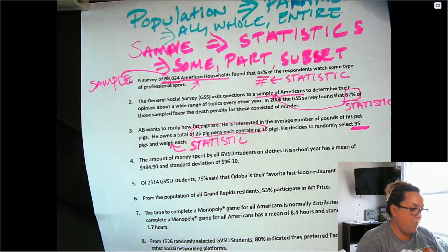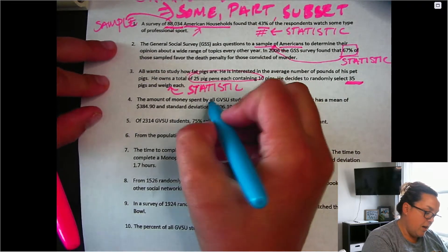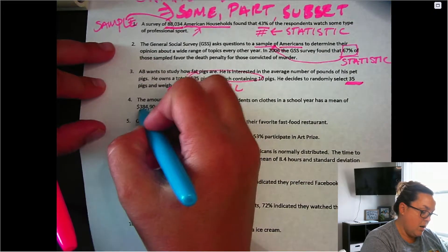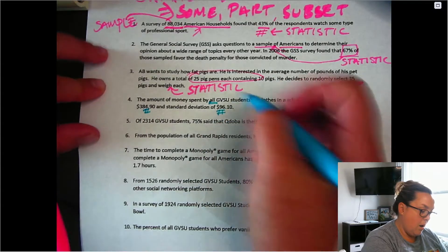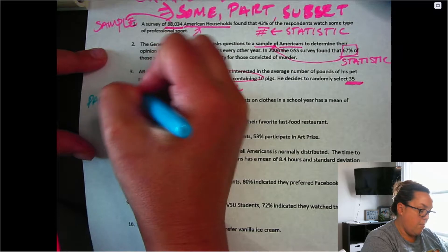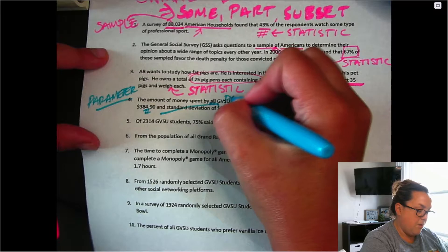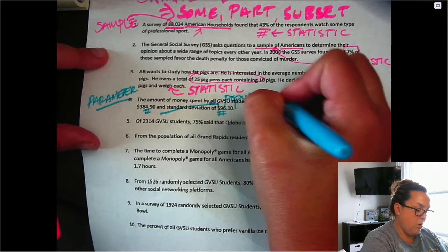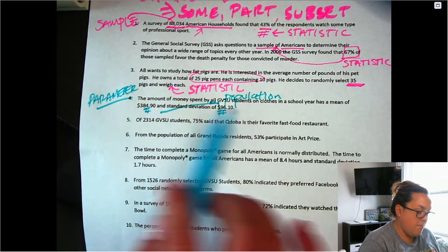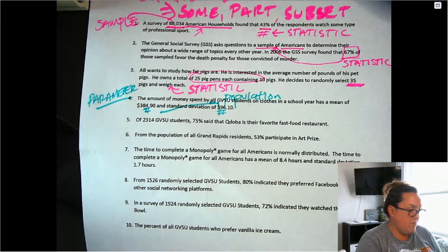Next, we have the amount of money spent by all GBSU students on clothes. Now here you see that word all. And so I know that this number here and this number here are both parameters. Remember, a parameter is a generic term. And they're both parameters because both of them refer to this group, which is a population group because it says the word all. So parameter is just a number referring to the population. Both that mean and that standard deviation are parameters because it's referring to the population of GBSU students.